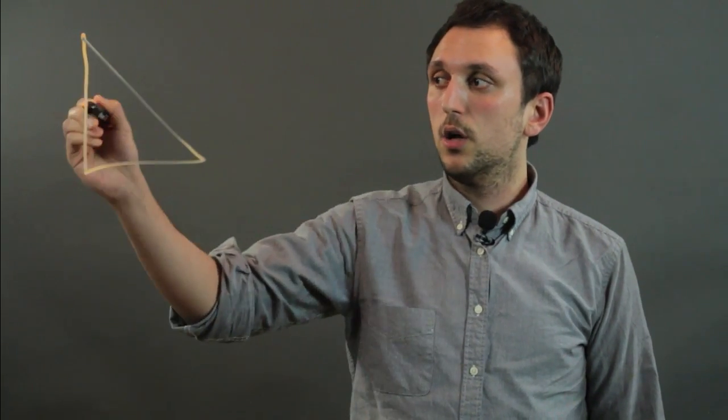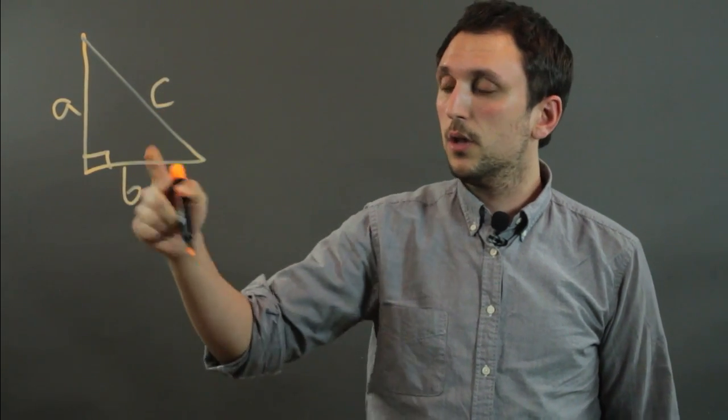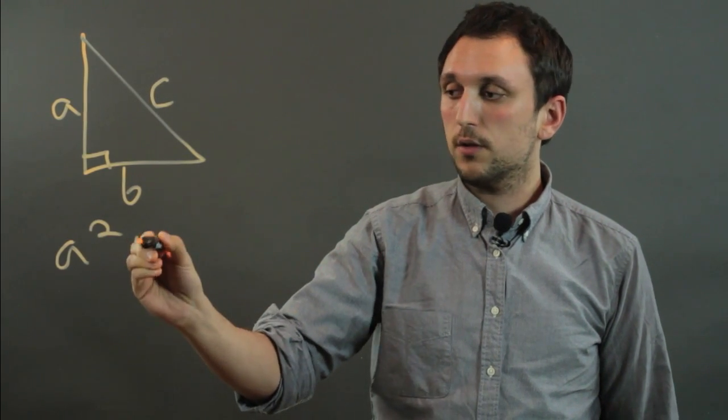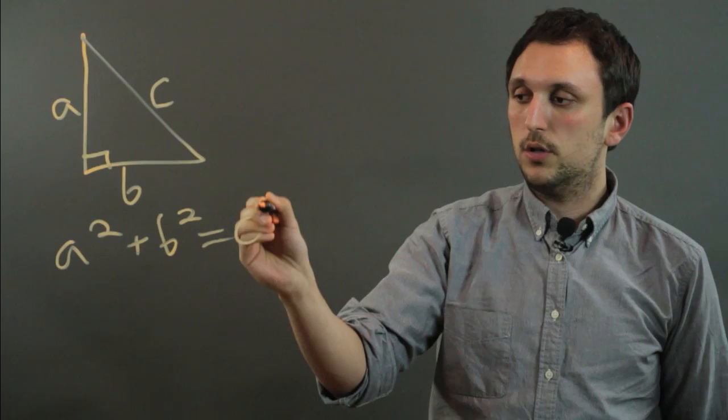Now, the Pythagorean theorem is a theorem that states that for any right triangle with leg A, leg B, and hypotenuse C, the square of the length of A plus the square of the length of B equals the square of the length of C.